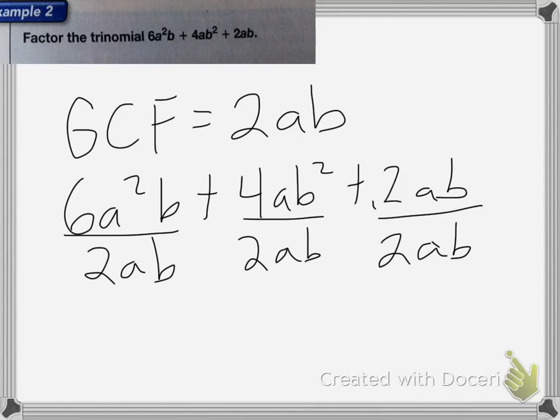So the 6 and the 2 cancel. 6 becomes a 3, 2 becomes a 1. The a and the a squared cancel, so I'm left with just an a, and the b's cancel. Here, the 4 and the 2 cancel. 2 becomes a 1, 4 becomes a 2.